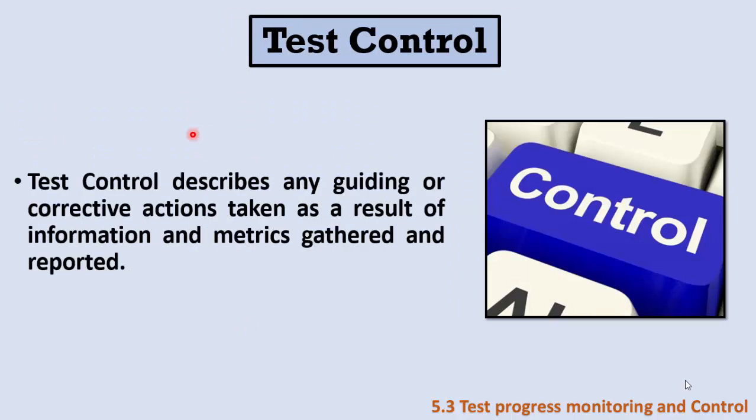After monitoring the testing, gathering the metrics, and writing the test report, we are able to perform test control. Test control is any guiding or corrective action taken as a result of gathering the information in the report. In test control, I may change the plan or change the execution.